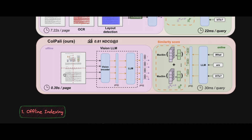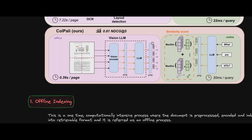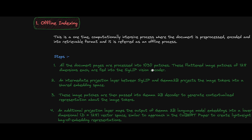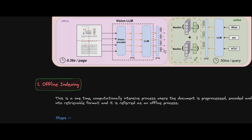The main offline process: data is pre-processed using the visual encoder SigLIP, patches are created, those patches go through the Gemma 2 billion model which decodes them and creates contextual representations of the image patches. A projection layer then creates a lightweight bag embedding in 128-dimensional vector space. These vectors are stored locally or in a database.